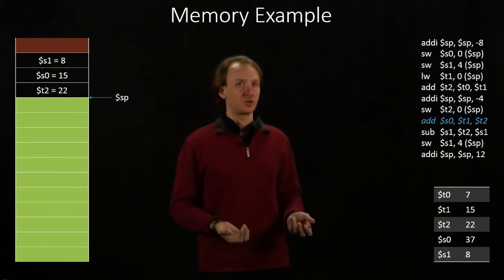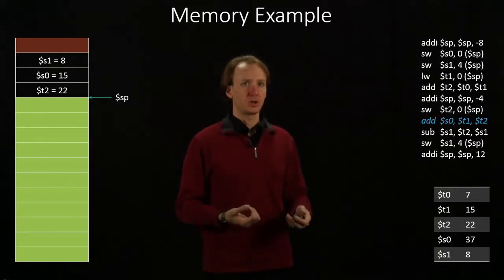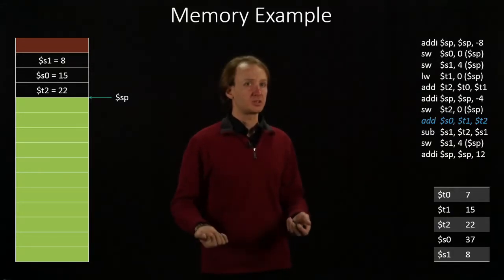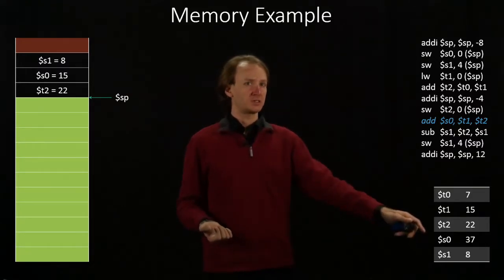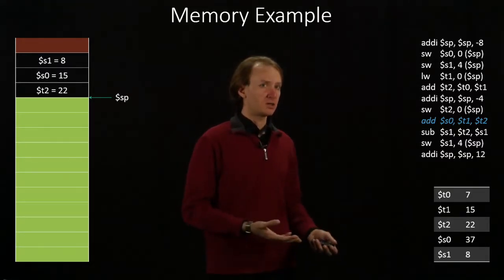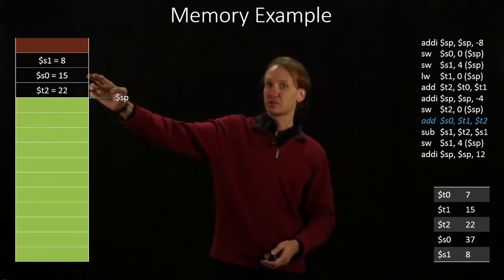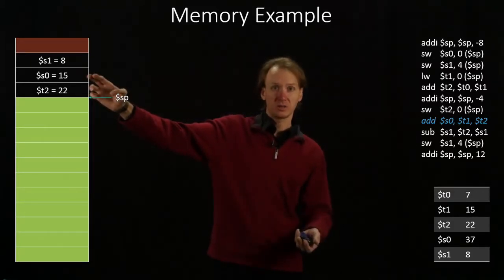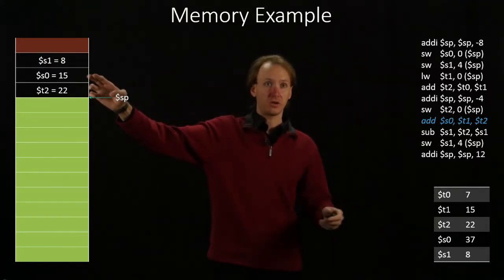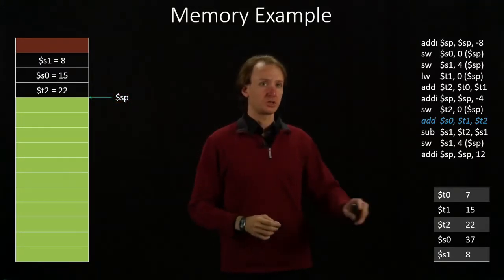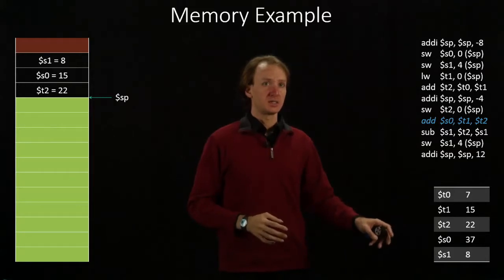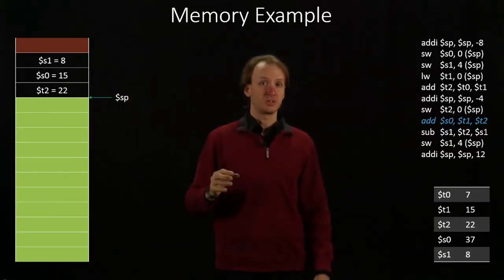The next thing is an add instruction. So I'm going to add T1 plus T2, which gives me 37, and I'm overwriting S0. So S0 now has the value of 37, but the memory location that I previously stored S0 into isn't changed. It still has that original value of S0. So changing the registers directly is not going to affect what happens in memory.